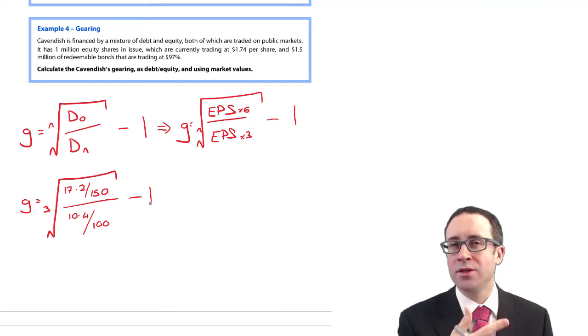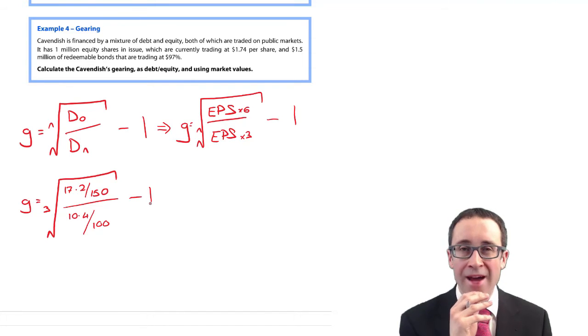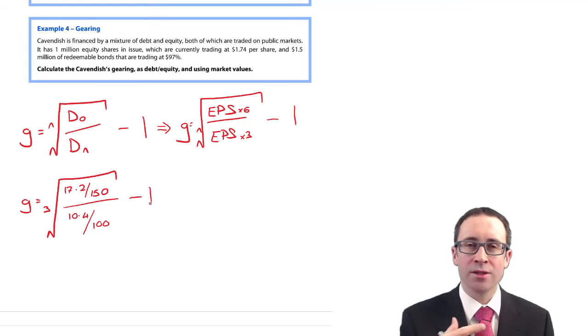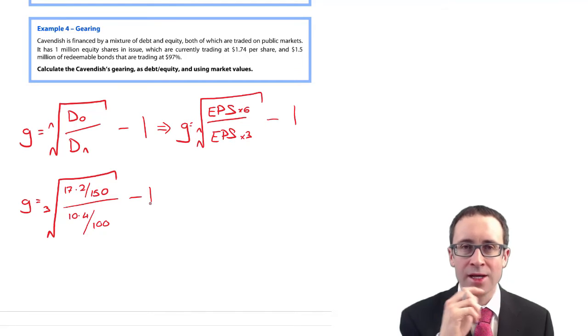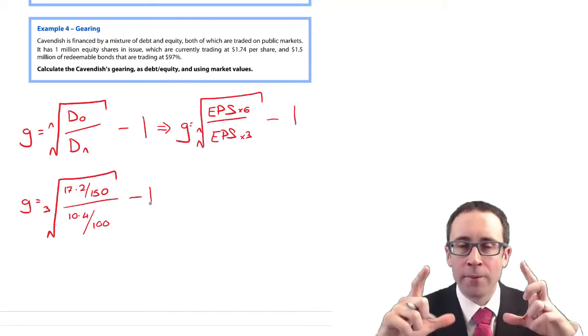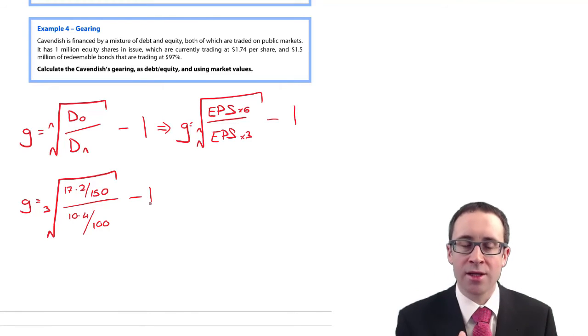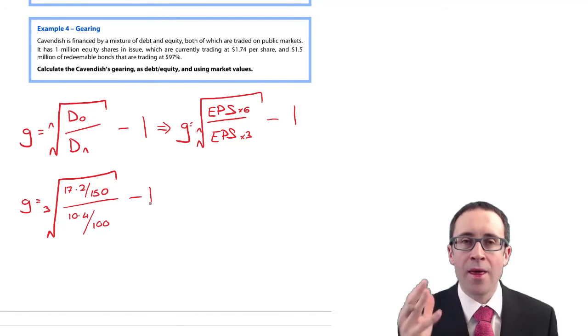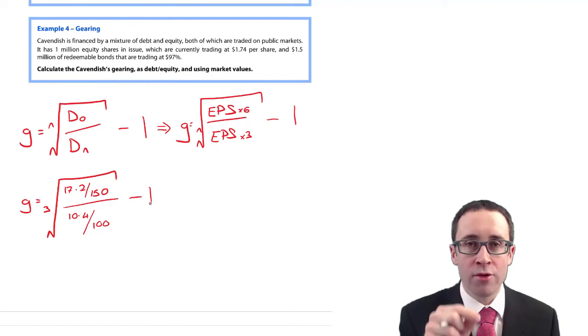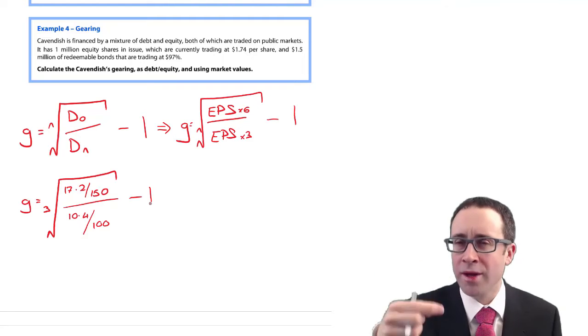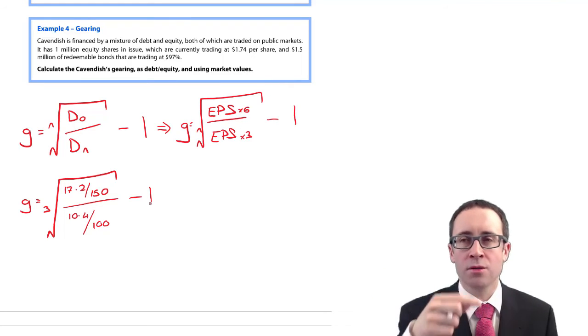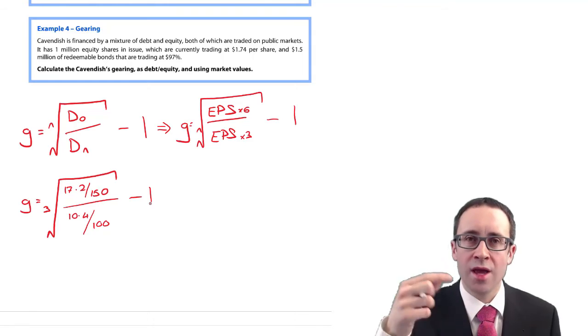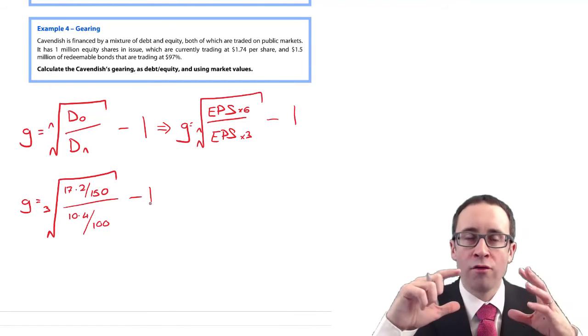It's tricky to use your calculator. Hopefully you're happy using it now because you've done similar calculations in F2. I'd do 17.2 divided by 150 on your calculator, then divide, then open a set of brackets and do 10.4 divided by 100, close the bracket, and press equals.